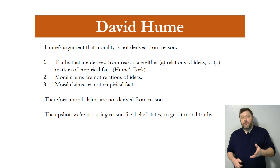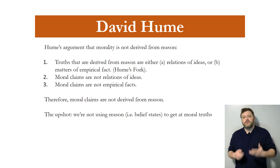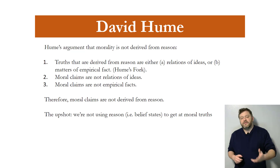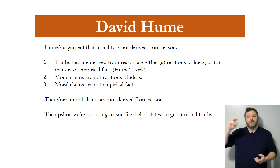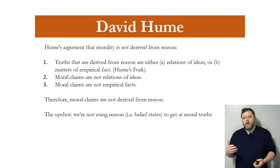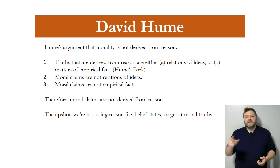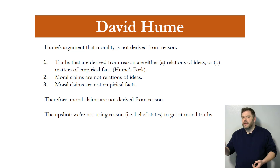Hume is what we call an empiricist — we learn stuff through investigation. So how are we going to derive moral truths? He's famous for what's called the is-ought fallacy or is-ought problem. The idea is: how can you develop an argument that starts with premises about the way the world is and has a conclusion about the way the world ought to be? When we're doing ethics we're talking about what you ought or ought not do. So saying 'that guy is stabbing that other guy, therefore he ought not stab that other guy' — that does not follow. That is not a logically valid argument.